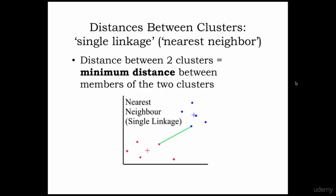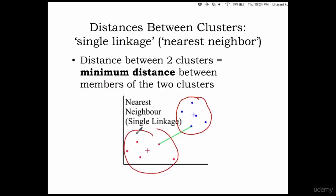All the distances we have calculated until now is the distance between different records. It can be used for different groups also. We have predominantly discussed about two data points and how to calculate the distance between those two. But what if you need to calculate the distance between one cluster and another cluster, or one record and a cluster? How do you do that?